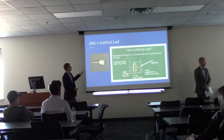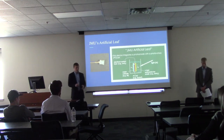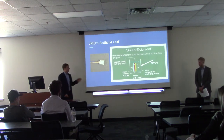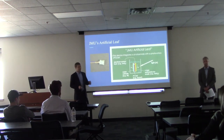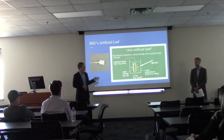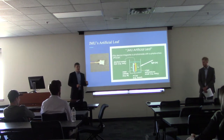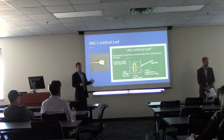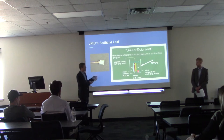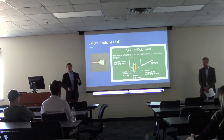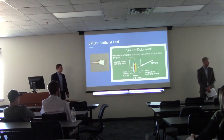Here's our artificial leaf at JMU — it's pretty much no bigger than your thumbnail. It starts with a layer of bismuth vanadate on the outside, which promotes the production of hydrogen. After that, there's an electrical contact layer of tin oxide, which also protects the leaf from the corrosive effects of salt water. Then there's a layer of gallium arsenide phosphide, which creates the PV cell.